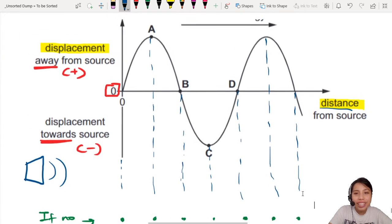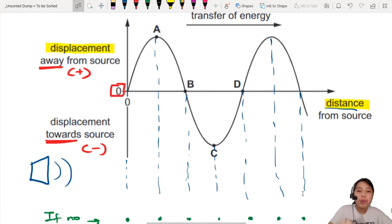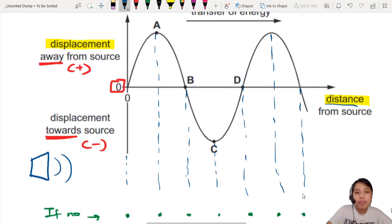Now pay close attention. Imagine, the first point, 0, is at 0 displacement. So if I draw that as a point here, it's going to be right here.